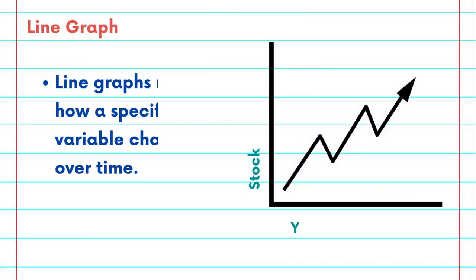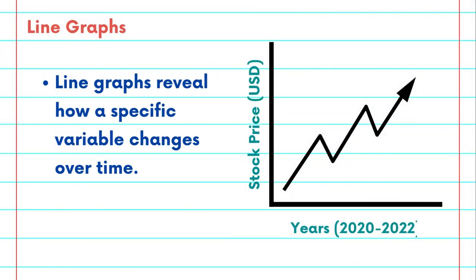Here we are talking about line graphs. At its core, a line graph is a visual representation of data points connected by straight lines. The horizontal axis typically represents time and the vertical axis showcases the values you are interested in, such as temperature, sales, or stock prices.